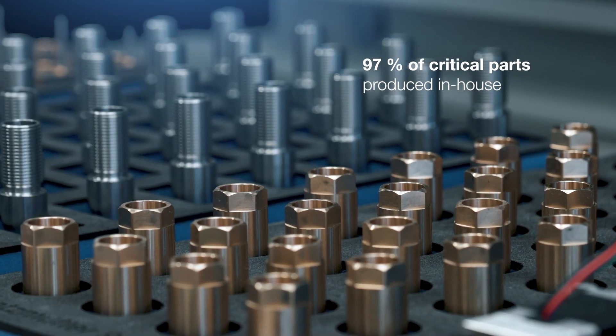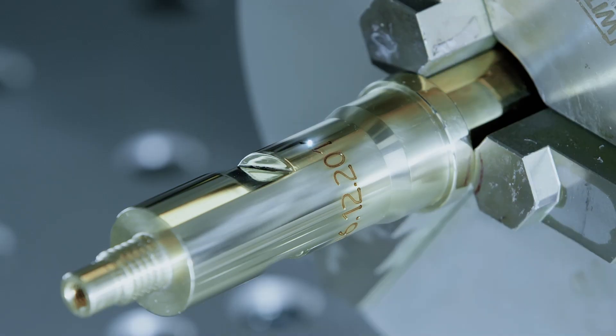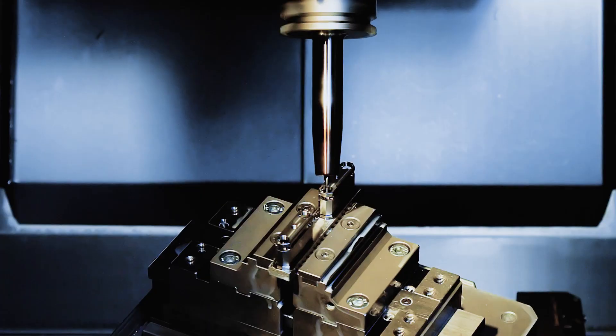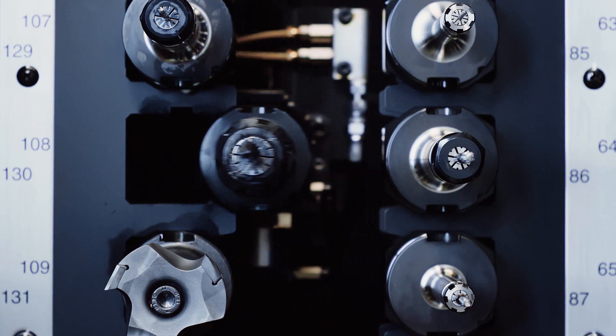97% of all critical mechanical parts are manufactured in Austria in our in-house production facility. That means we also challenge the status quo of high-tech production chains.